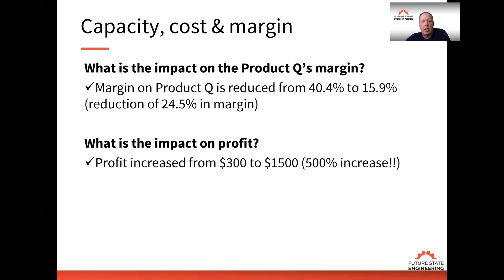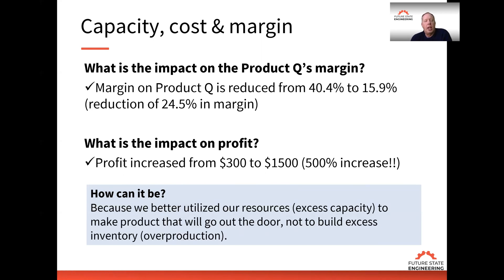Profit goes up 5x — the margin on the individual product went down, but the overall profit margin went up 5x. How is that possible when the individual product margin is reduced but profit increases? Because we're better utilizing our resources — that excess capacity, or hidden capacity, to make products we can sell, not to build excess inventory, which we call overproduction. Making product decisions in isolation sometimes works, sometimes it doesn't. You need to understand the impact of each product on the profit margin of the organization.